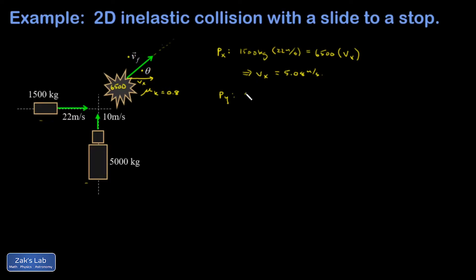My initial y momentum: I have a mass of 5000 kilograms moving in the plus y direction at 10 meters per second. Final y momentum: I have a mass of 6500 kilograms moving in the plus y direction with some unknown speed vy. I can very quickly solve for vy and I get 7.69 meters per second.